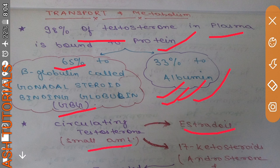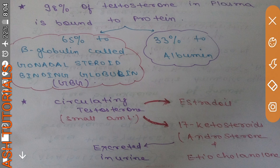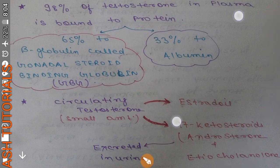A small amount of circulating testosterone is converted into estradiol. The maximum part is metabolized into 17-ketosteroids. Examples of 17-ketosteroid metabolites include androsterone and etiocholanolone, where etiocholanolone is an isomer of androsterone. These are the basic metabolic products of circulating testosterone and are excreted in urine.